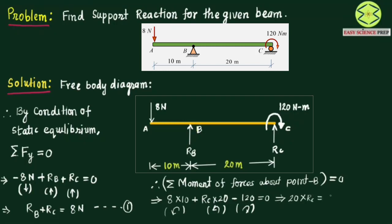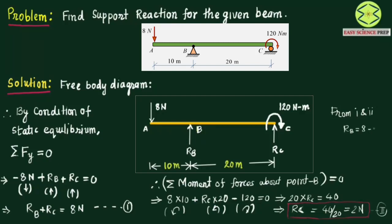From the moment equation about point B, we get 20 times RC equals 120 minus 80, which is 40. So RC equals 40 divided by 20, which is 2 Newtons. Substituting this value of RC into equation 1, we get RB plus 2 equals 8, therefore RB equals 6 Newtons. By following the condition of static equilibrium we found the support reactions for beam ABC: RB equals 6 Newton and RC equals 2 Newton.